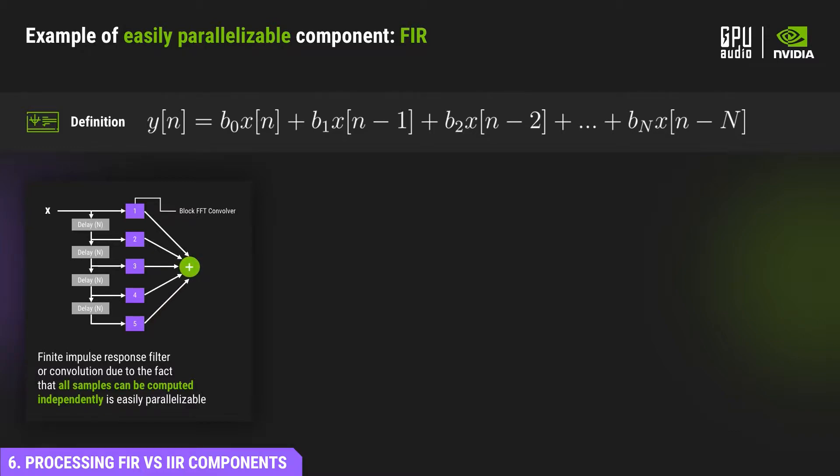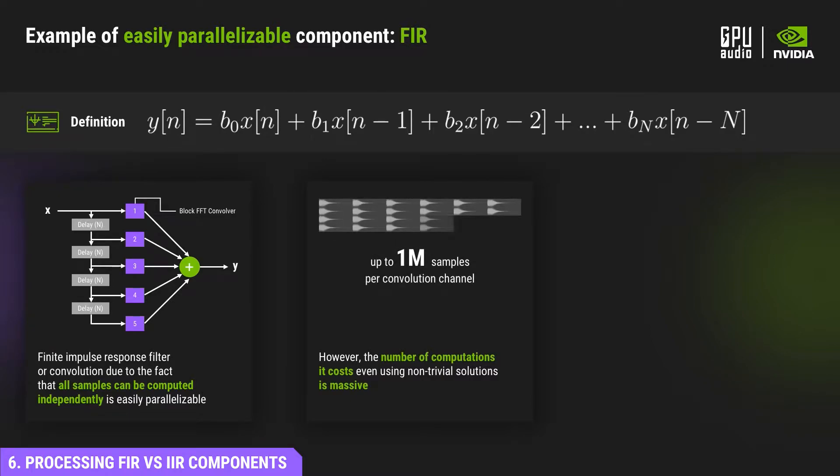The right side of the equation doesn't have Y anywhere. It means that we're lucky we can compute all samples in our buffer independently.